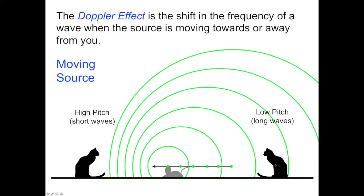The cat on the right, sitting in the direction that the mouse is moving away from, sees the waves stretched out. A long distance between the wave peaks gives the impression of a low pitch, a smaller frequency.